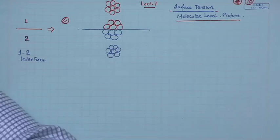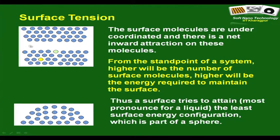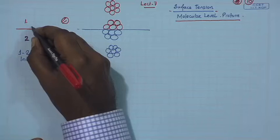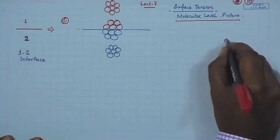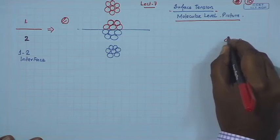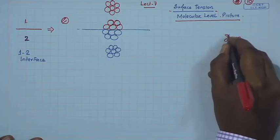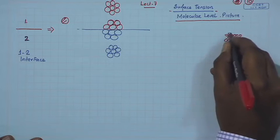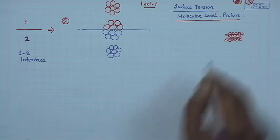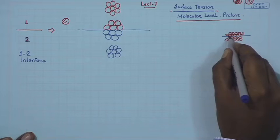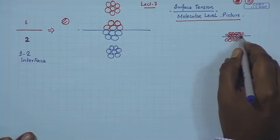We have already talked about how, if you have a bulk and then you create a surface, you are essentially overcoming the interactions between the molecules present on both sides. You have a bulk with molecules, and you can create a surface by cutting it — in fact, switching off the interaction between these molecules.